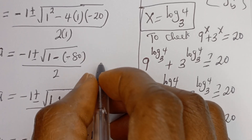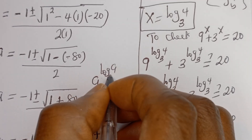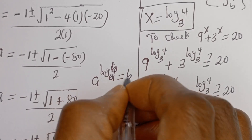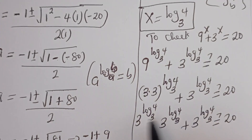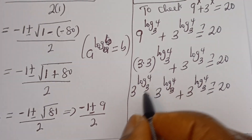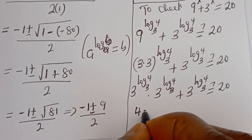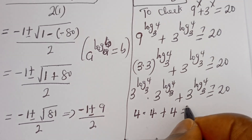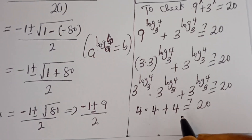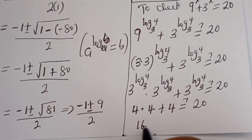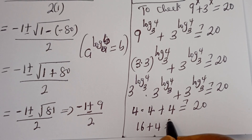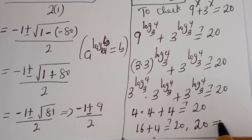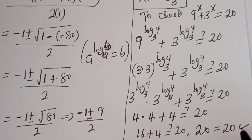Using the identity a to the power of log_a(b) equals b, we get 4 multiplied by 4 plus 4, which must equal 20. We have 4 times 4 equals 16, plus 4 equals 20, which is equal to 20 — which is true. I hope you enjoyed the video.